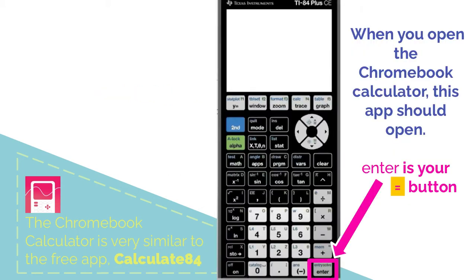When you open the Chromebook calculator, this app should open. You should see a black calculator that you can position next to the screen you're working on, so you don't have to keep going back and forth between screens.